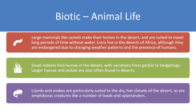Lions live in the deserts of Africa, although they are endangered due to changing weather patterns and human interference. Small rodents also find homes in the deserts, with variations from gerbils to hedgehogs. Hedgehogs are able to survive in very arid and dormant lands. Large hyenas and jackals are also found in the deserts. Lizards and snakes are particularly suited to the dry hot climate of the desert, as are amphibious creatures like a number of toads and salamanders. You won't spot lizards in the winter, but you will find plenty of them in the summer because they have adapted and are suited to the dry, hot climate.